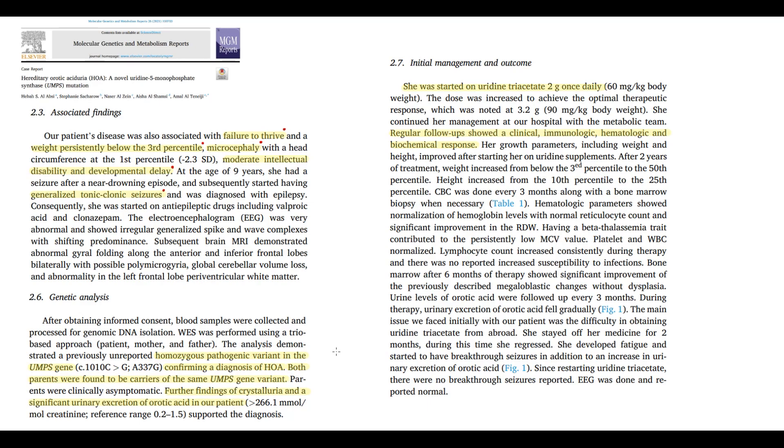So how to verify the diagnosis? The most precise method is to find the mutation that caused the defect in UMP synthase. And in this case, the mutation was present. And urine analysis shows crystalluria and significant increase in excretion of erotic acid. Based on these findings, the diagnosis of erotic aciduria was made. Patient was started on uridine triacetate, and as we can see, treatment went well.